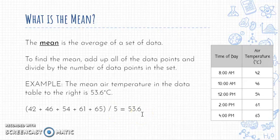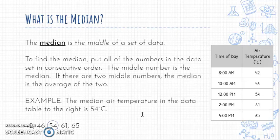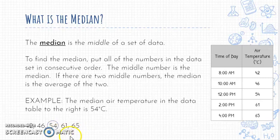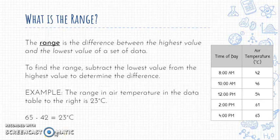Another useful value is the median — the middle of a set of data. To find the median, line up all your numbers and find the middle value. If there are two middle numbers — say 54 and 61 — add those two together and divide by two to find the median. In this example with five numbers, the middle or median value is 54 degrees Celsius.